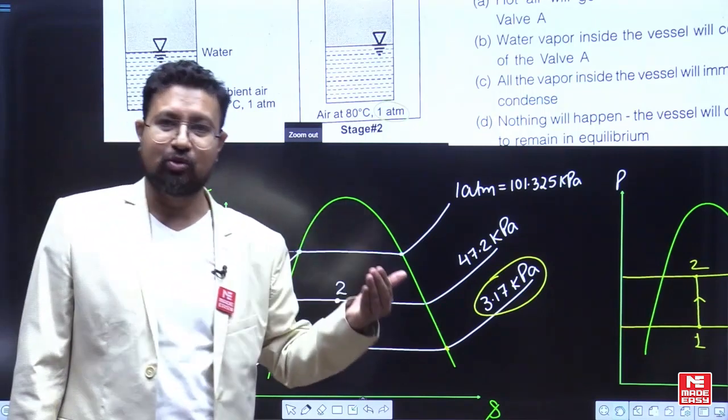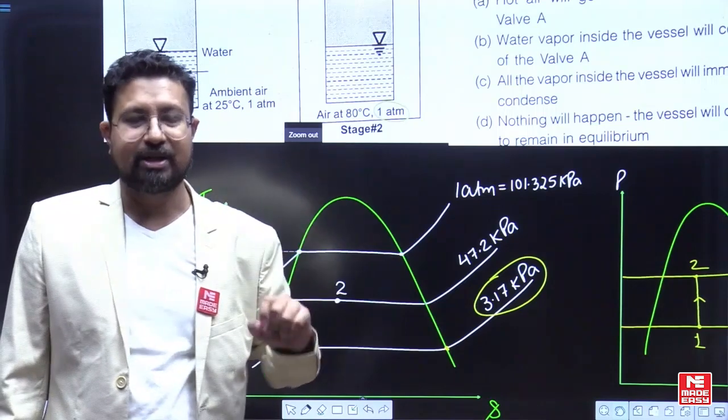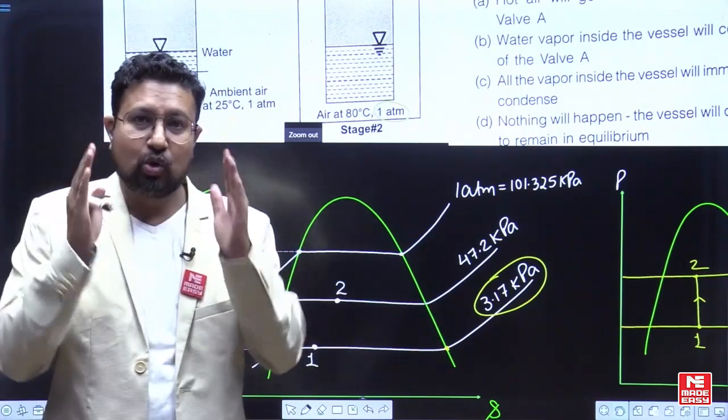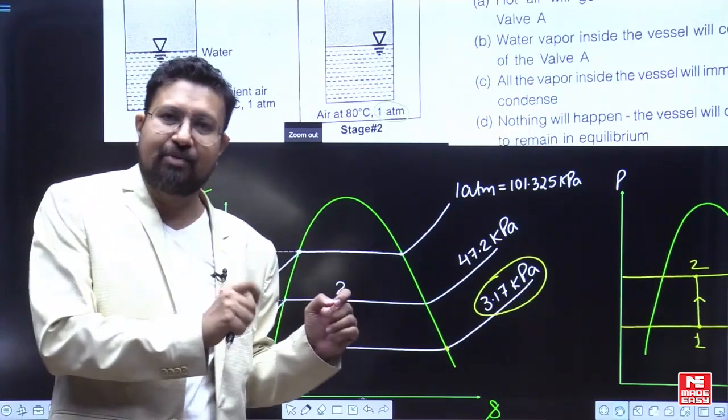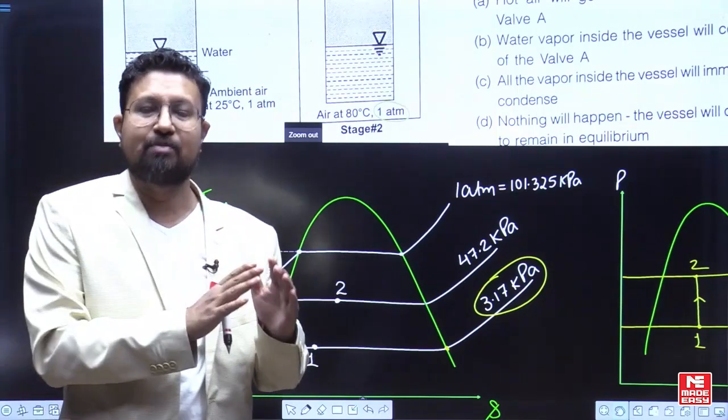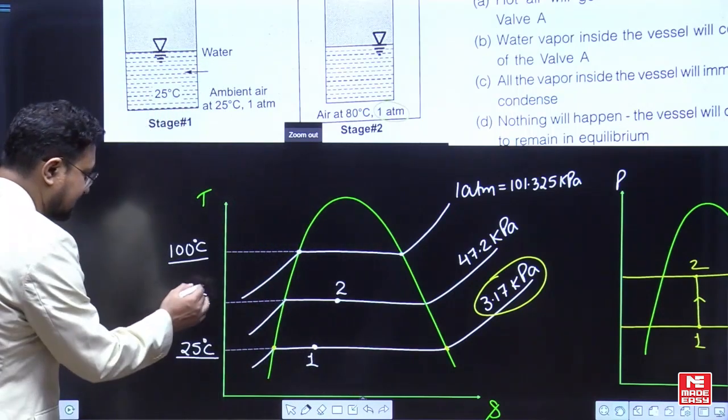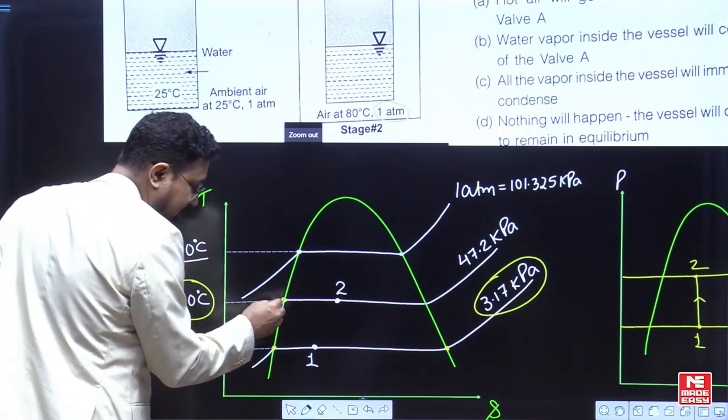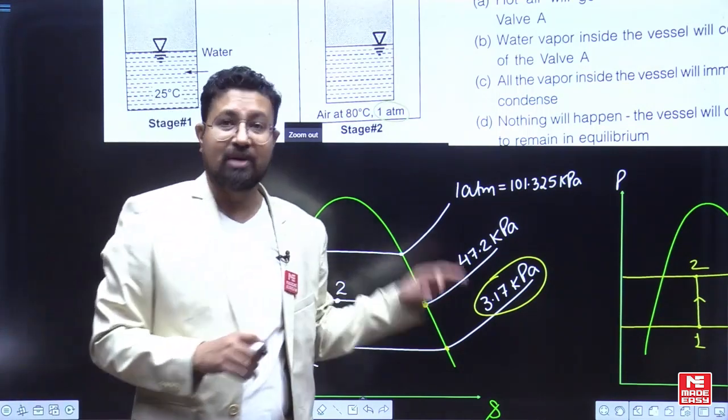So when you heat the water up to 100 degrees Celsius, it becomes saturated liquid. That means the liquid will start converting into vapor. So the saturation pressure of liquid as well as the water vapor above the liquid will be one atmosphere when the temperature is 100. But if the temperature is below 100, like in this case it is 80 degrees Celsius, the pressure of saturated liquid as well as the saturated vapor will be below one atmosphere.